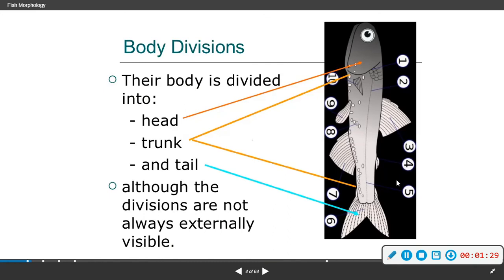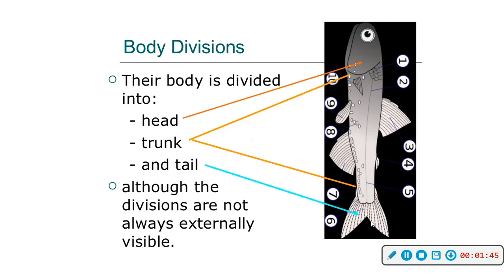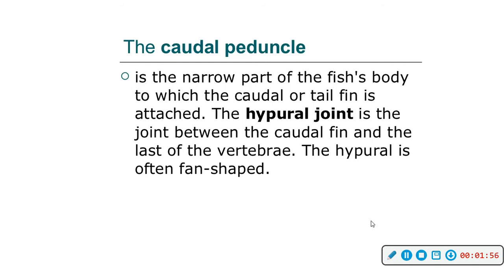You have the mouth, pectoral fins, scales, pelvic fins, and the anal fin. There are three different regions of the fish: the head, the trunk, and the tail. These will look different on different fish depending on what that fish is adapted to do. The caudal peduncle is the narrow part of the fish's body to which the caudal or tail fin is attached. The hypural joint is the joint between the caudal fin and the last vertebrae, and is often fan-shaped.